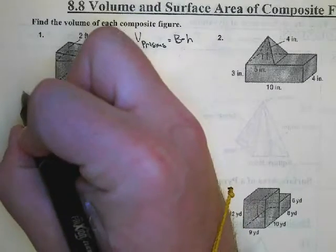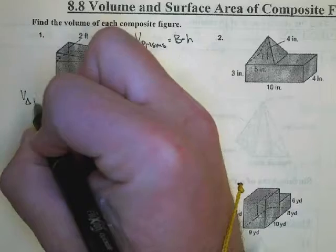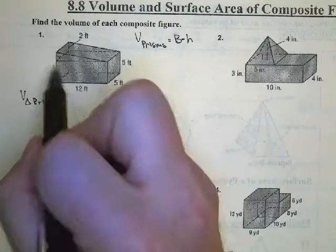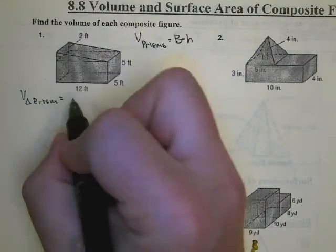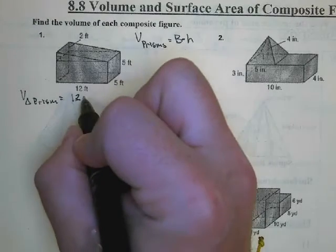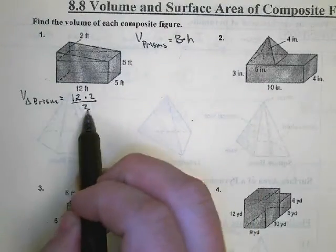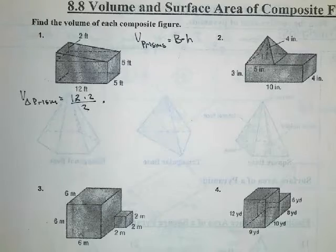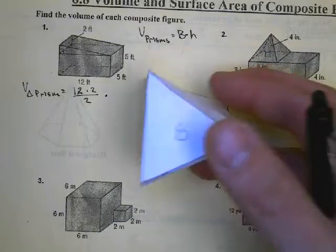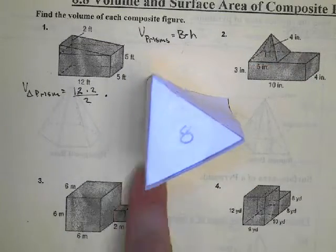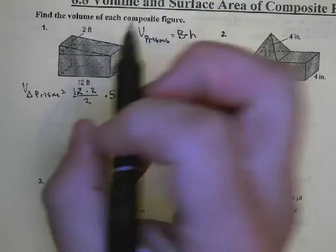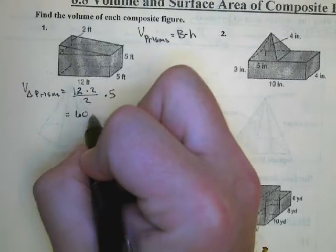For the volume of my triangular prism, I'll take the base area of that triangle — that's going to be 12 times 2, divide that by 2 for the area of a triangle. Then I multiply that by the height of my prism, which is 5. Think of it as resting on the triangular side, so that triangular face is the base area and this length becomes the height. Times 5 gives us a volume of 60 feet cubed.